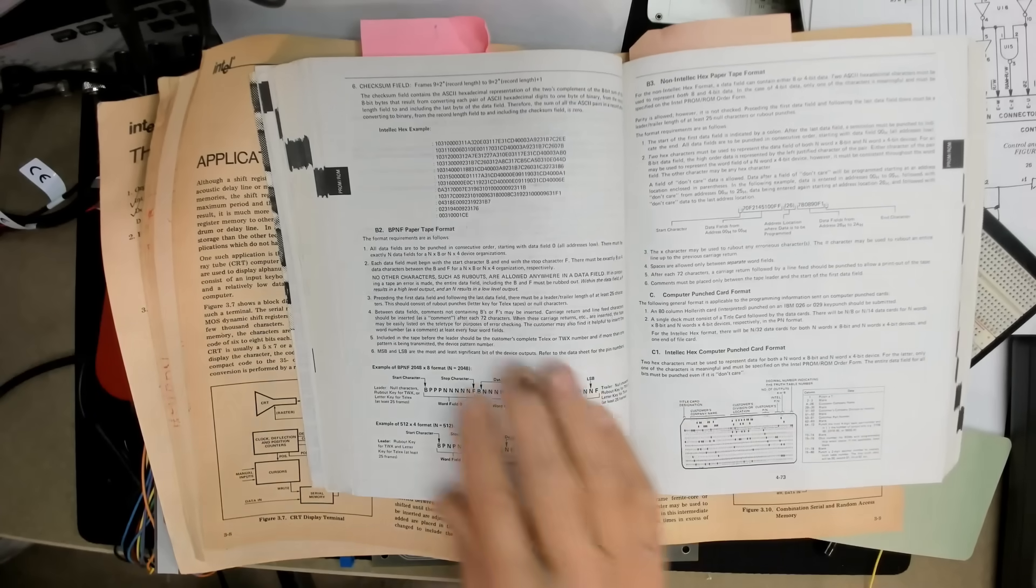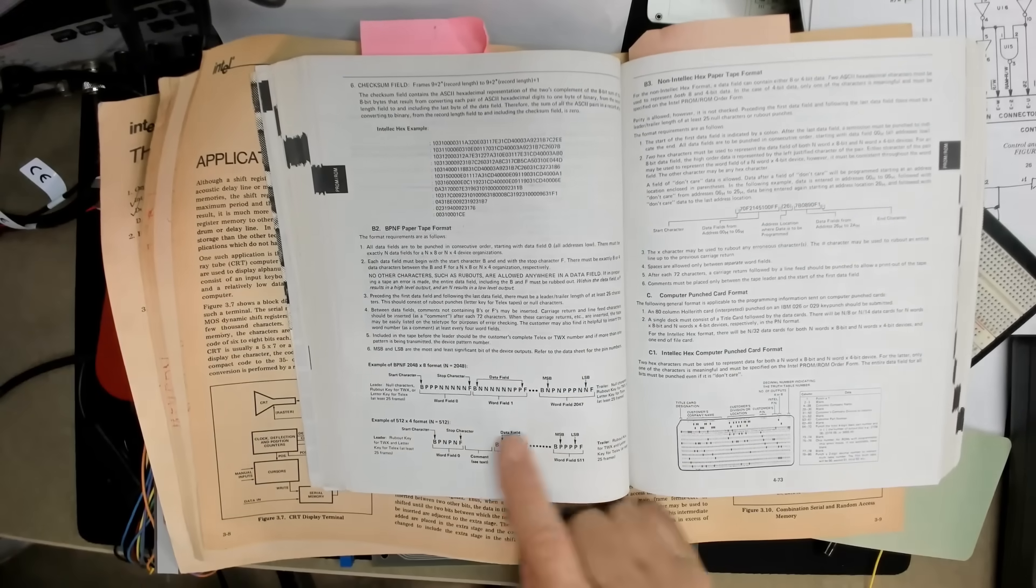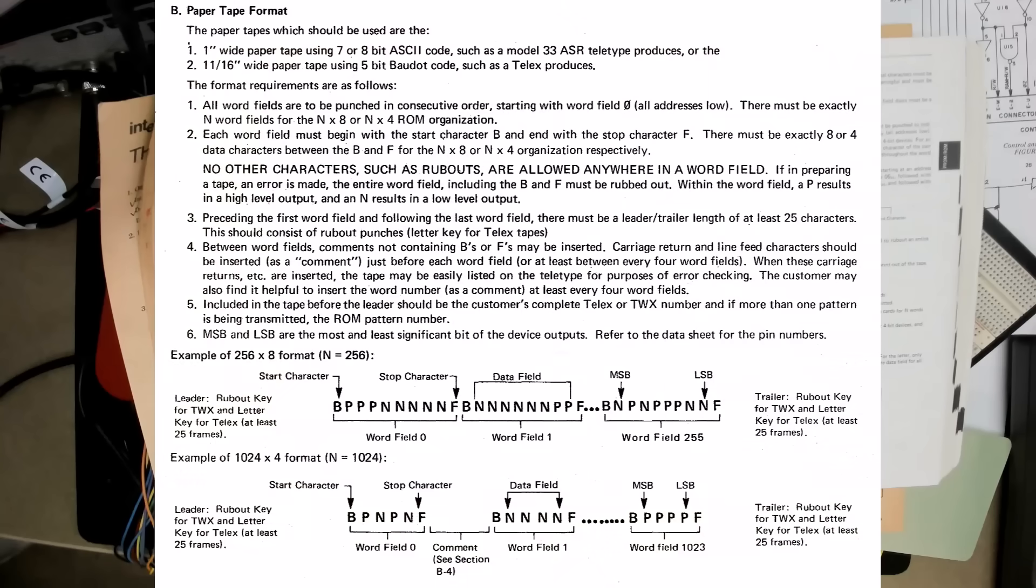So let's look at this on the BPNF on punched paper tape format. So each memory location is a word field, which would either have four bits or eight bits of data depending on the target device. And each of these word fields began with the start character B for begin and ended with the stop character F for finish or final.